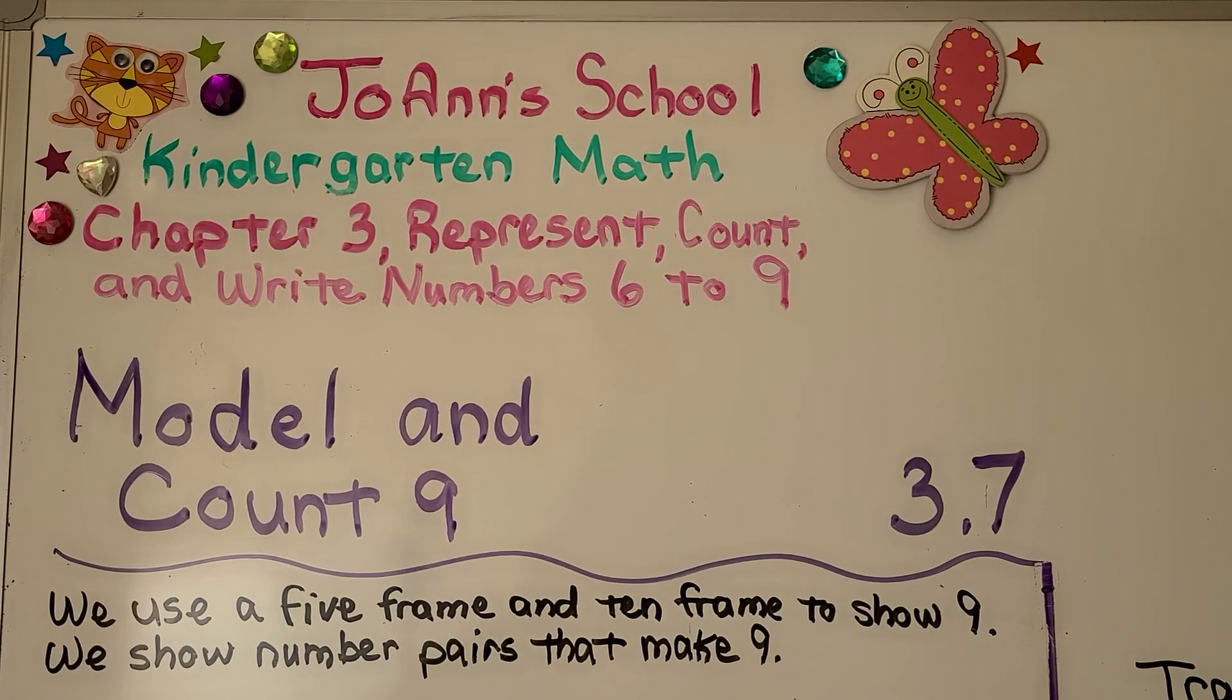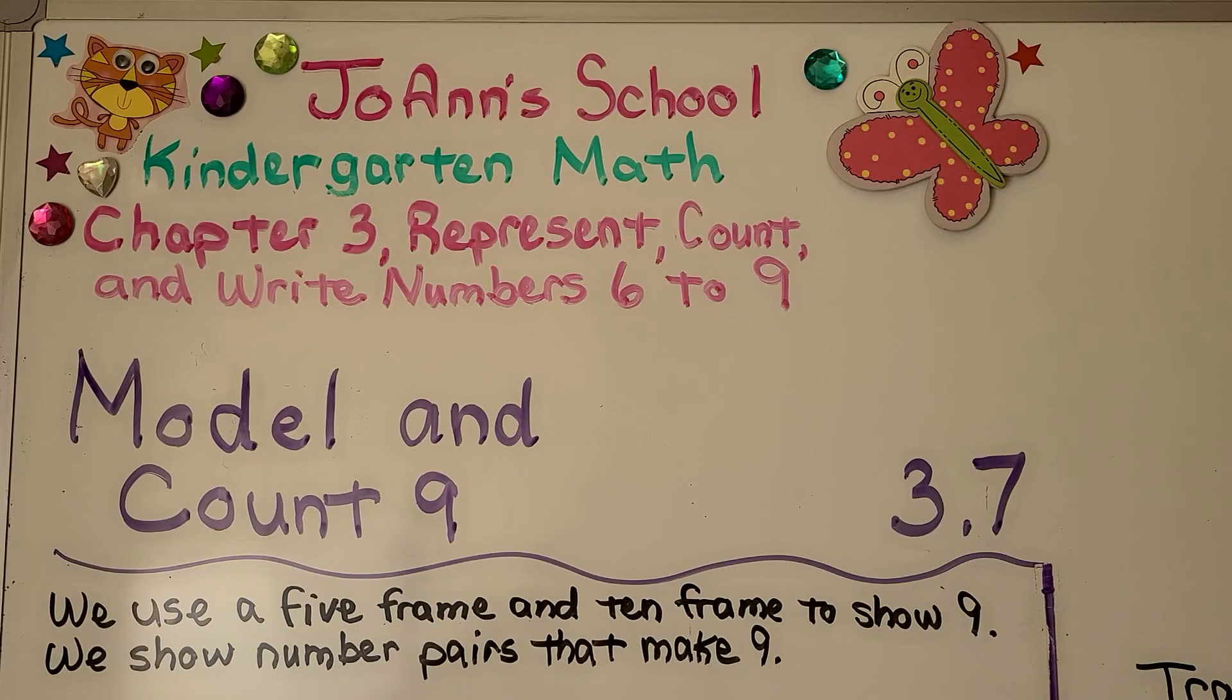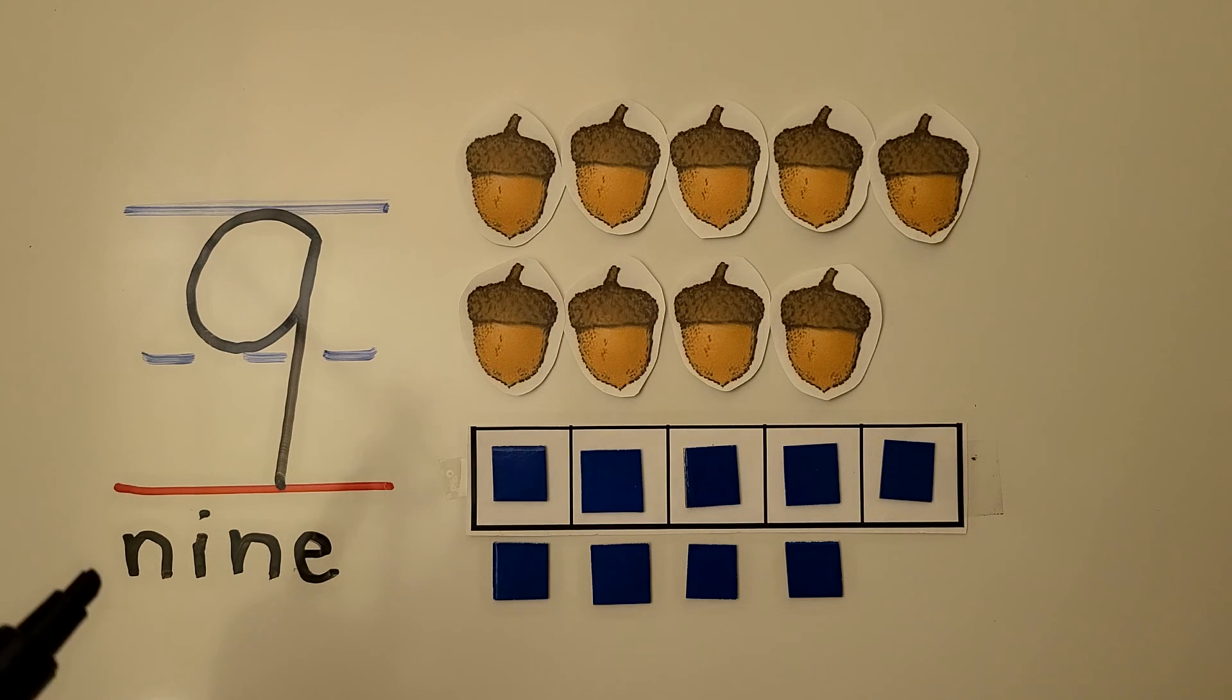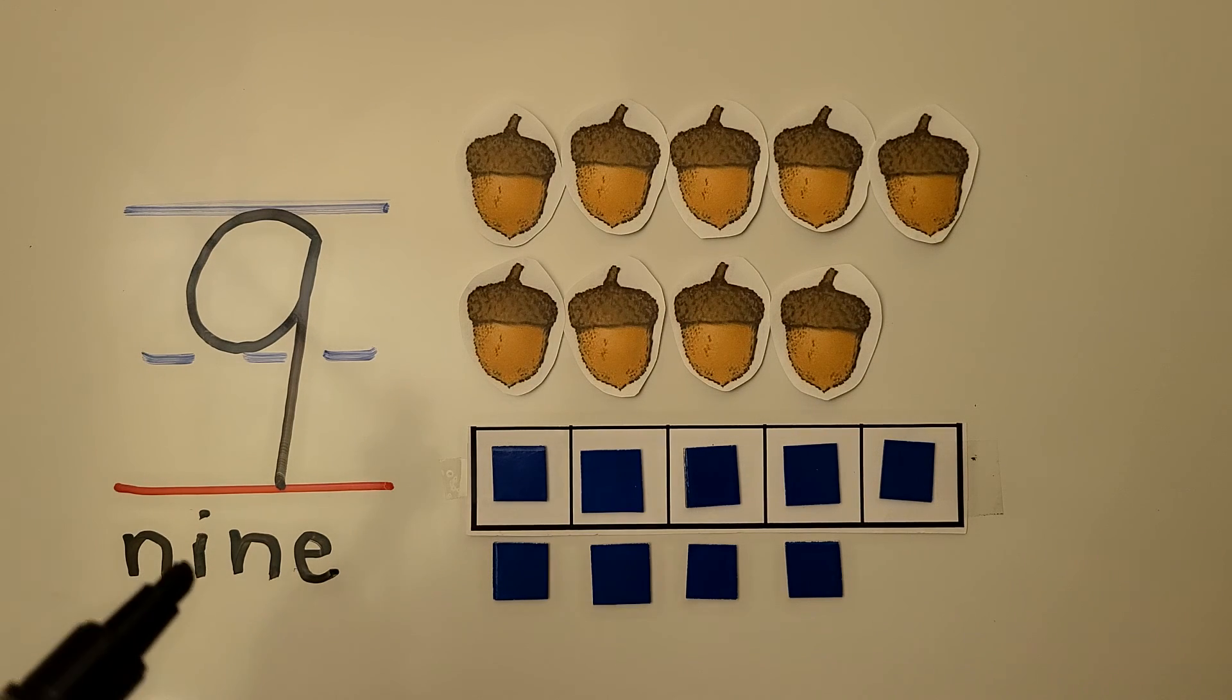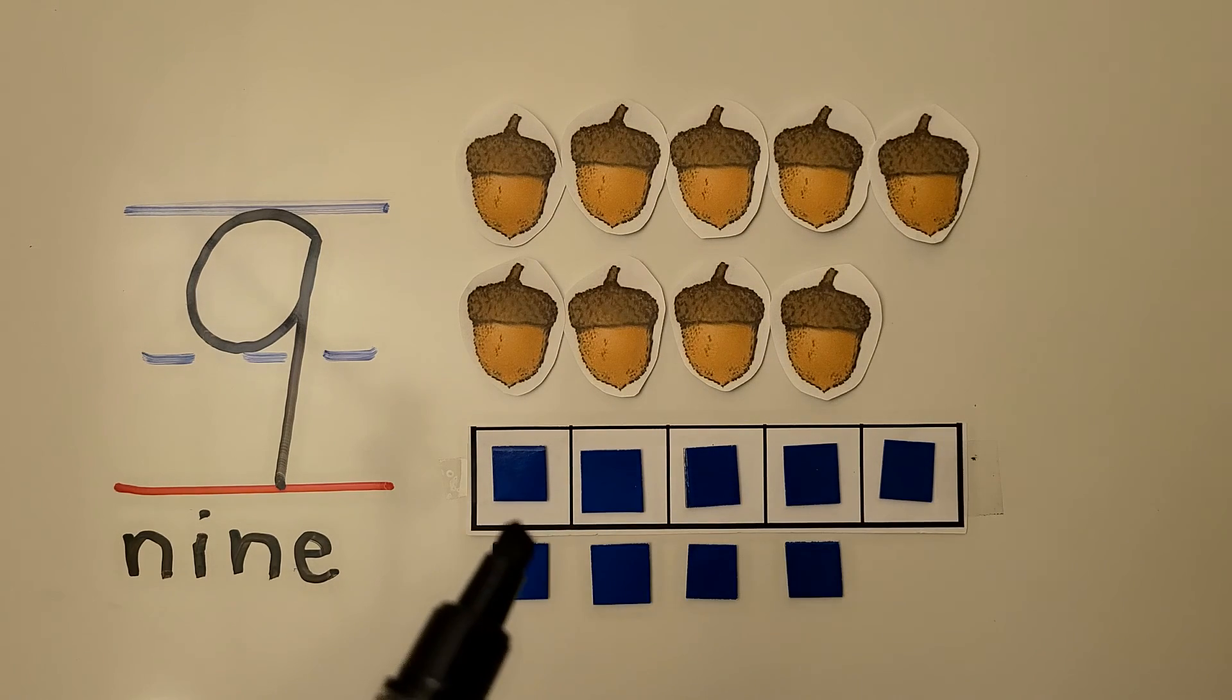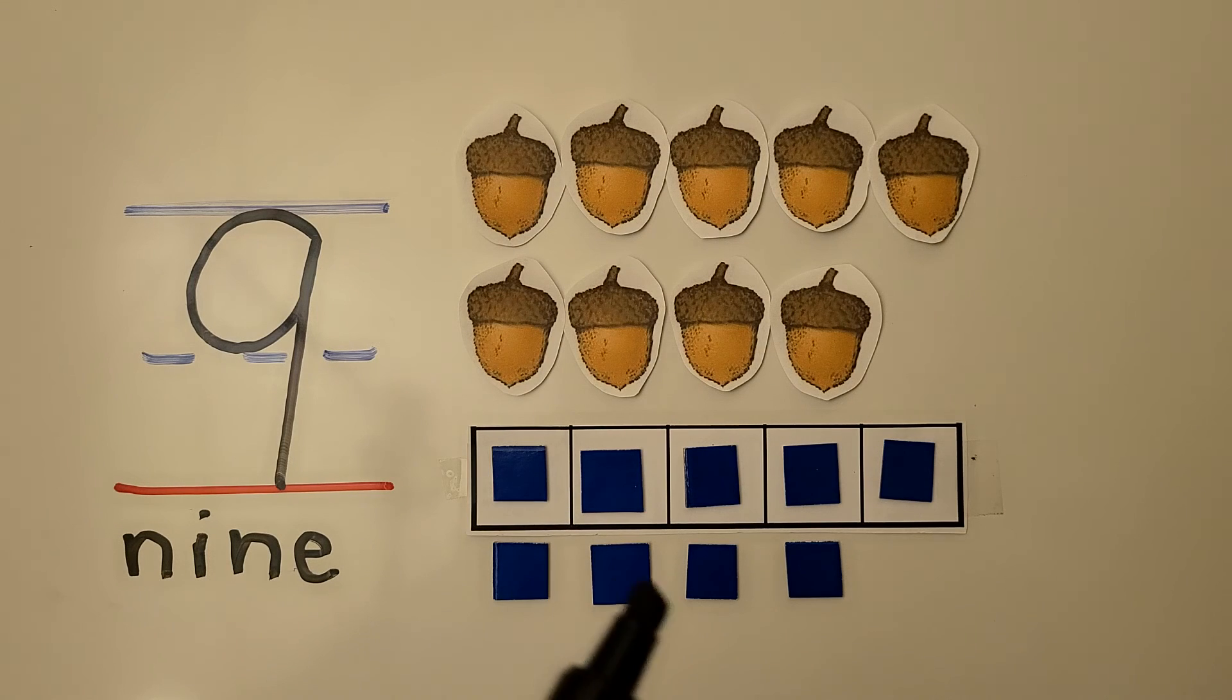Lesson 3.7: Model and Count 9. In this lesson we use a 5 frame and a 10 frame to show 9, and we show number pairs that make 9. Here we have the number 9 and we have the word nine, N-I-N-E.